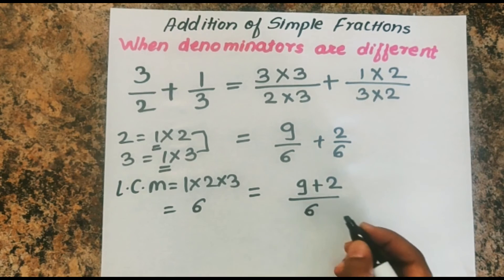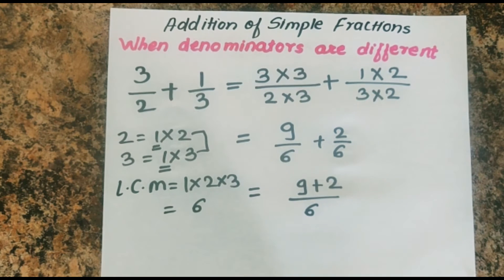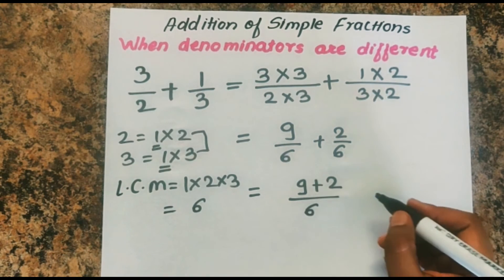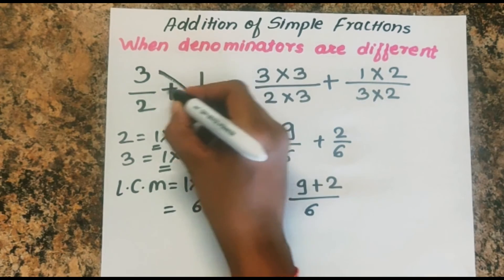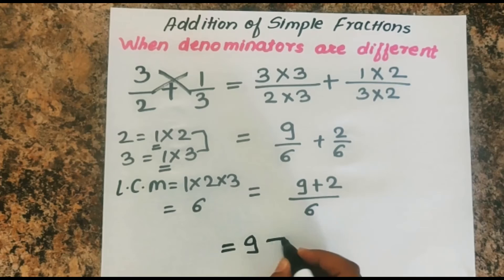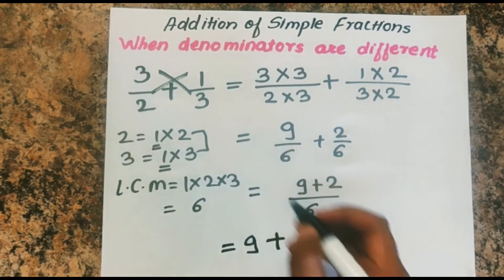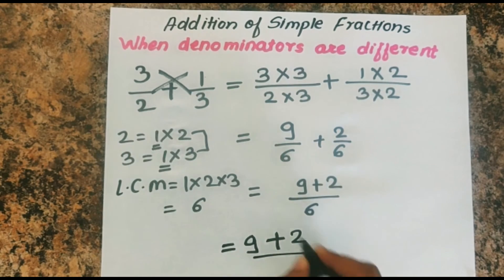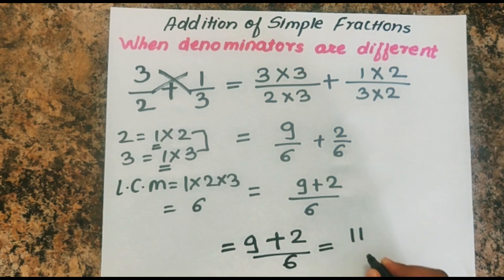Also, in case if you don't want to find LCM, you can do cross multiplication, which means 3 into 3 becomes 9, 1 into 2 becomes 2, and 2 into 3 becomes 6, which is also equal to 11 upon 6.